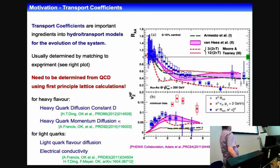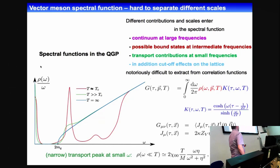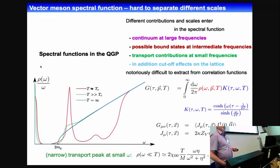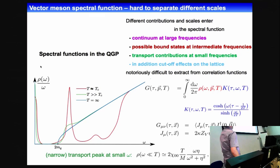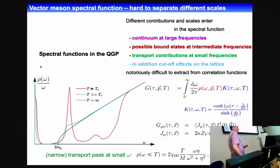The problem is we want to extract spectral functions, but all we can calculate on the lattice are correlation functions. We calculate these correlation functions, and then we need to invert this integral equation to get the spectral function. This inversion is already a very complicated problem. The spectral function also has contributions from different scales: at large energies there is a continuum, there may be possible bound states at intermediate frequencies, and at low omega there is a transport peak, which contains the transport coefficient in the limit omega to zero through a Kubo formula.